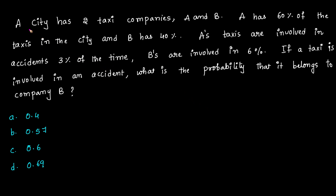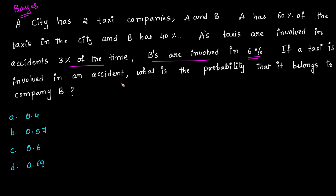In this video we'll understand an interesting problem from Bayes' theorem. A city has two taxi companies A and B. Company A has 60% of the taxis and company B has 40%. A's taxis are involved in an accident 3% of the time and B's taxis are involved 6% of the time. If a taxi is involved in an accident, what is the probability that it belongs to company B?